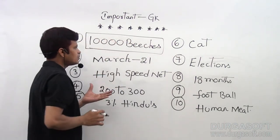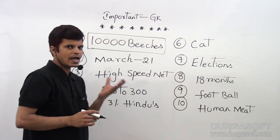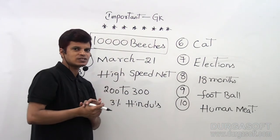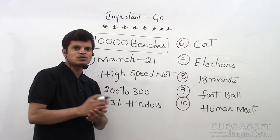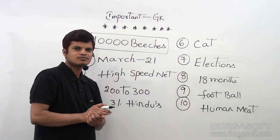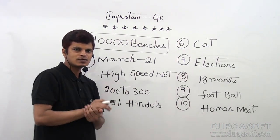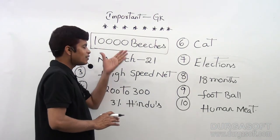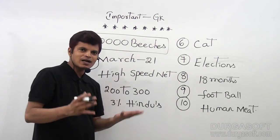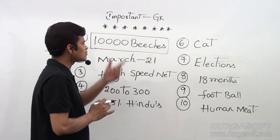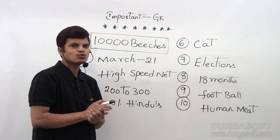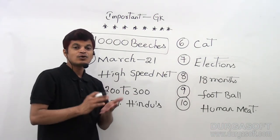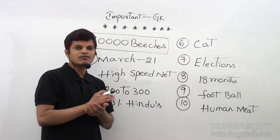Which of the following countries has 10,000 beaches? We will talk about this — 11 beaches, 27 beaches.